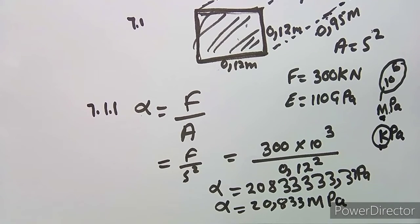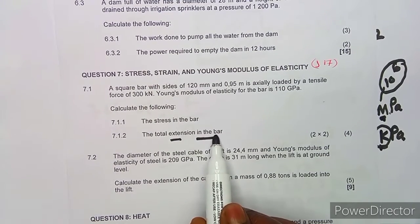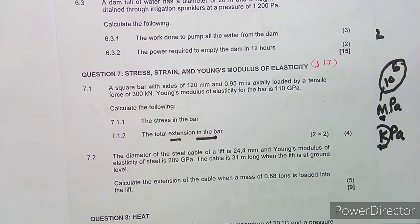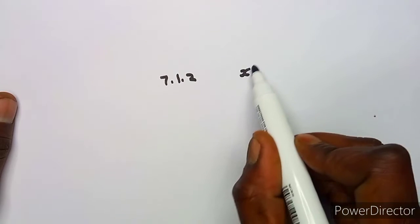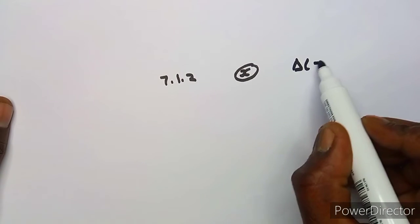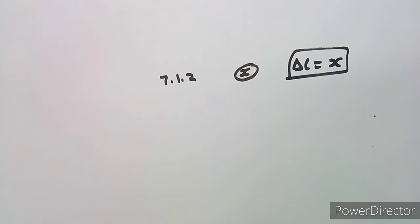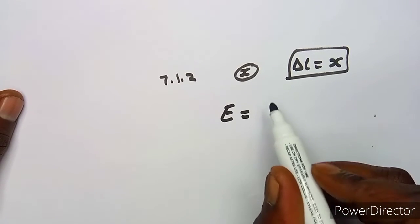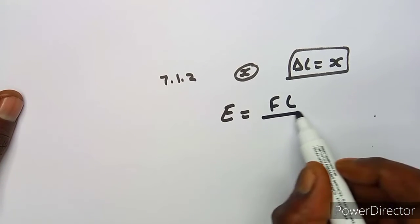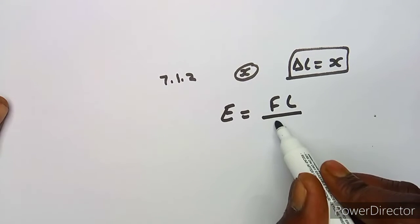The next part of the question asks us to find the total extension in the bar — that is, the change in length. We refer to this as x, or delta-L. There is a formula I like to work with because it's easier to transpose and isolate the subject I need.